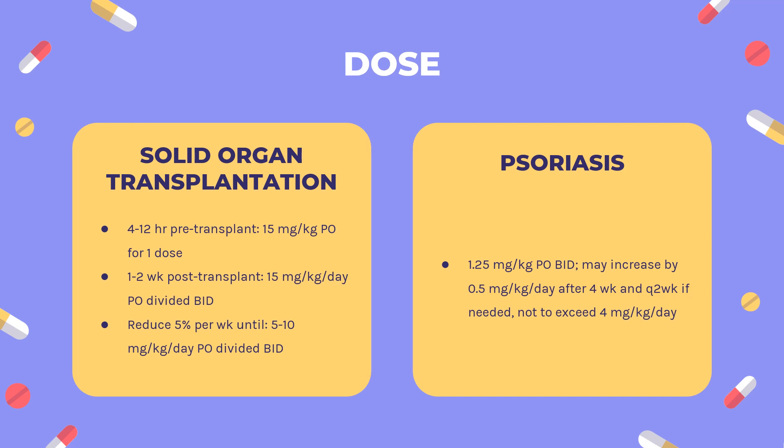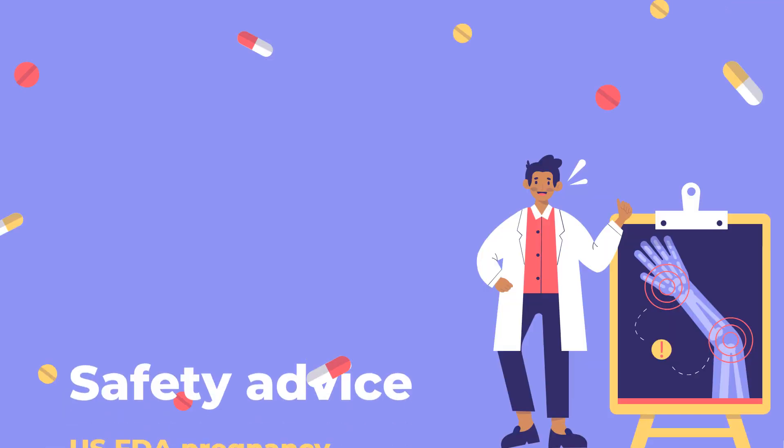Dosing — Psoriasis: Indicated for treatment of adult non-immunocompromised patients with severe recalcitrant plaque psoriasis who have failed to respond to at least one systemic therapy (e.g., PUVA, retinoids, or methotrexate), or in patients for whom other systemic therapies are contraindicated or cannot be tolerated. Gengraf or Neoral: 1.25 mg/kg PO BID; may increase by 0.5 mg/kg/day after 4 weeks and every 2 weeks if needed; not to exceed 4 mg/kg/day. Discontinue if no improvement is observed at 6 weeks on the maximum daily dose. Decrease dose by 25–50% to control adverse effects such as hypertension or elevations in serum creatinine greater than 30% of pretreatment level.